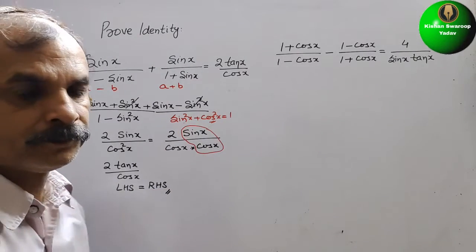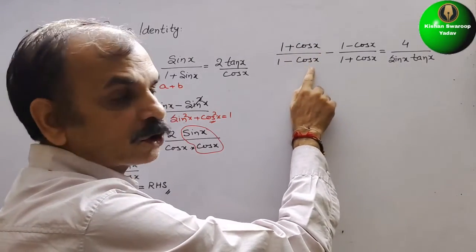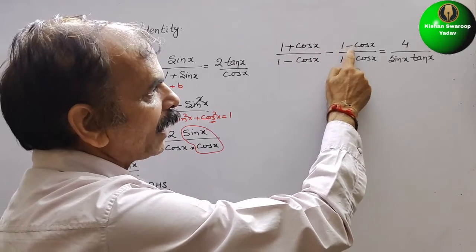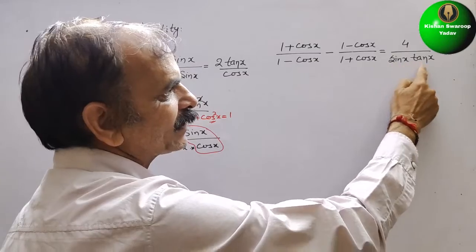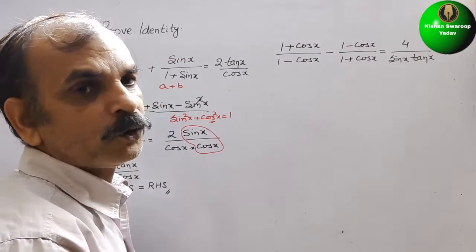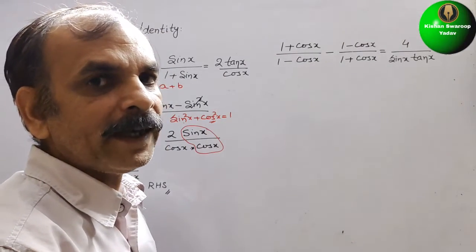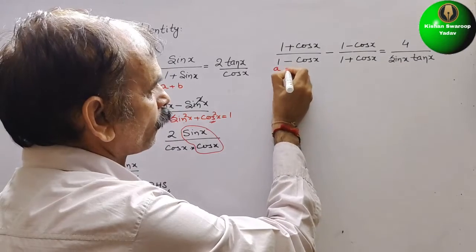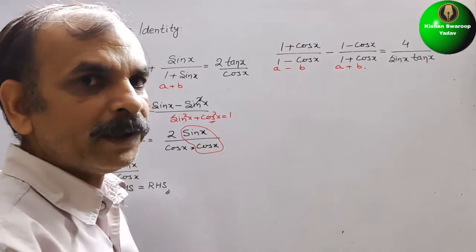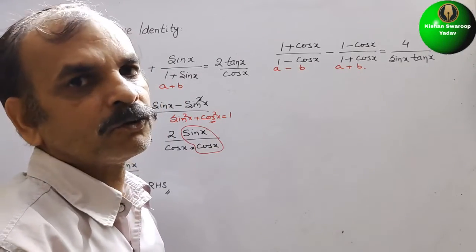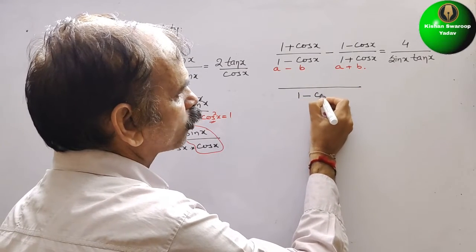Now the second identity: (1 + cos x) / (1 - cos x) minus (1 - cos x) / (1 + cos x) is equal to 4 / sin x. Here also we do the same. The denominators are (1 - cos x) which is A minus B, and (1 + cos x) which is A plus B. So the LCM will be A² - B², giving 1 - cos²x.